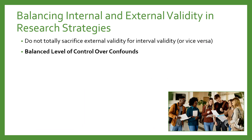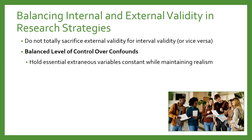Fortunately, researchers can strike a balance between internal and external validity. We don't have to totally sacrifice one for the other. We can have a balanced level of control focused on eliminating confounds while maintaining realism — holding potential confounds constant as much as possible without tampering with environmental variables essential to realism. For instance, in the belongingness study, you could focus only on online students to control for online versus face-to-face, and only on first-year non-transfer students to control for previous college experience, and chances are they would represent your population of interest anyway without hurting external validity.